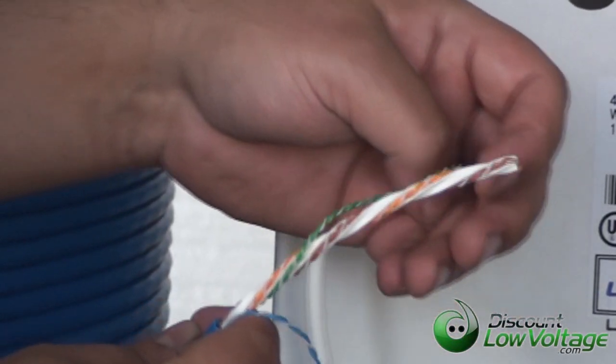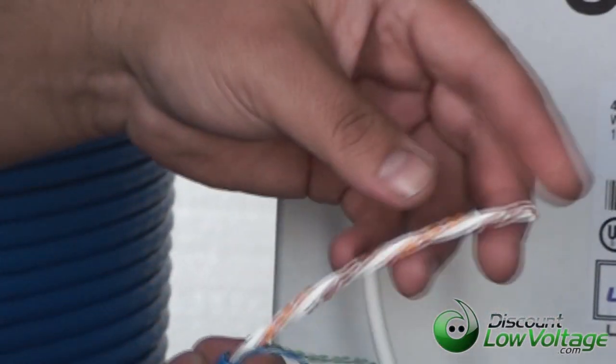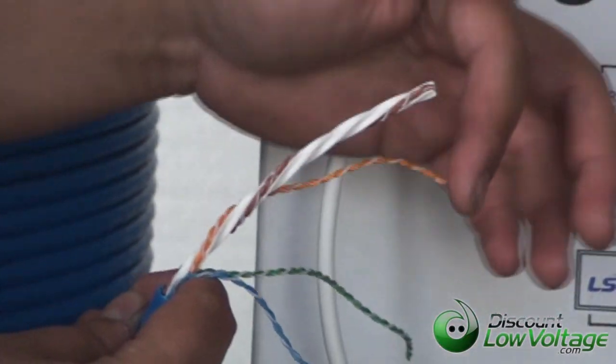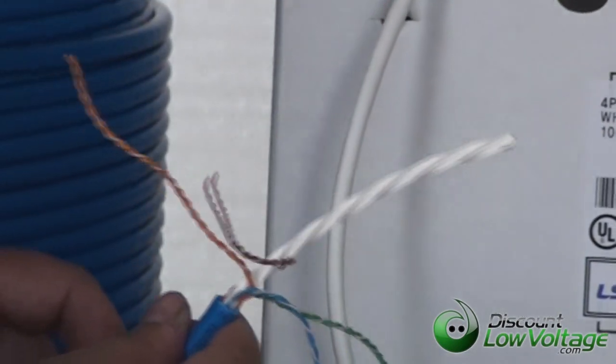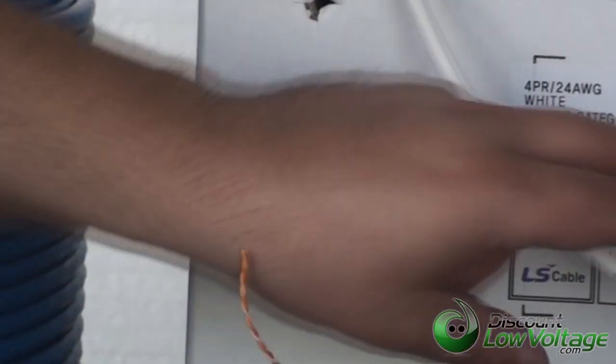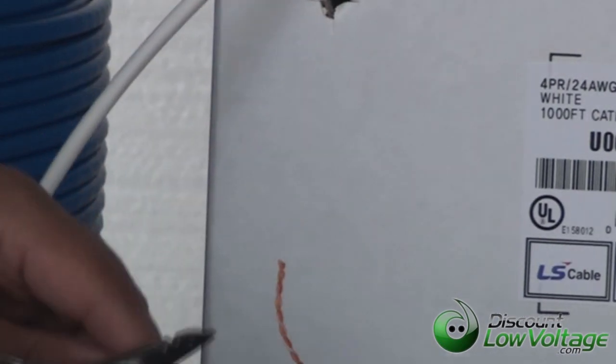Now every pair is twisted around, tightly twisted around the center spline, and the center spline is twisted pretty tight as well. Now let's see what the Category 6 looks like underneath the jacket here.